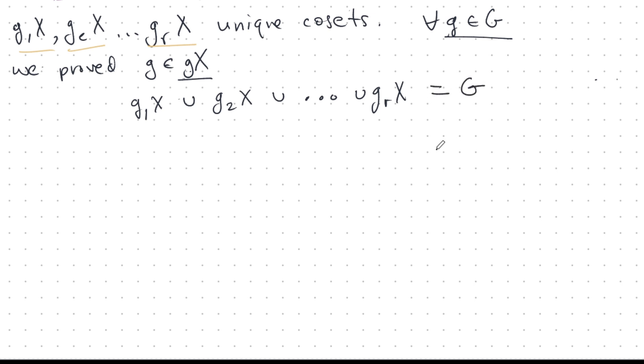And so we have the following interesting thing: the union of all of these distinct cosets is G. We know that's true. That's the union property. Actually, we proved that before in the last video. Well, we're doing it again here.